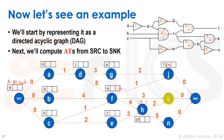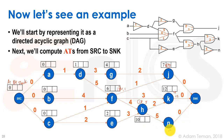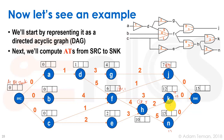For K: 6 plus 3 equals 9, and 10 plus 2 equals 12, so the AT at K is 12. For N: 10 plus 5 equals 15. The sink takes the worst case of all three outputs: 15, 12, and 7, giving a worst-case arrival time of 15. We've now filled in all the ATs for each node.